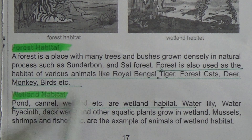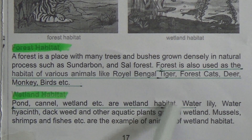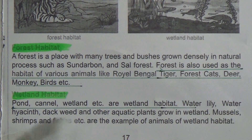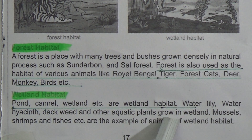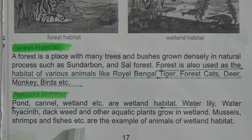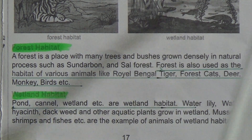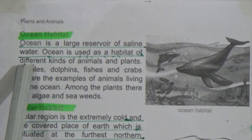Wetland habitat: ponds, canals, wetlands, etc., are wetland habitats — underline this line. Water lily, water hyacinth, duckweed, and other aquatic plants grow in wetlands. Mussels, shrimps, and fishes are examples of animals of wetland habitats — underline this line.